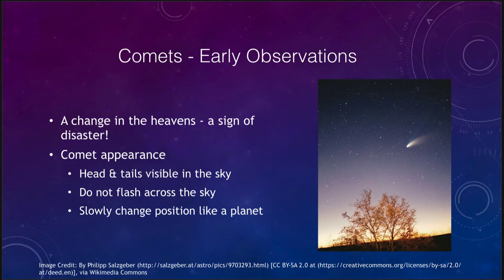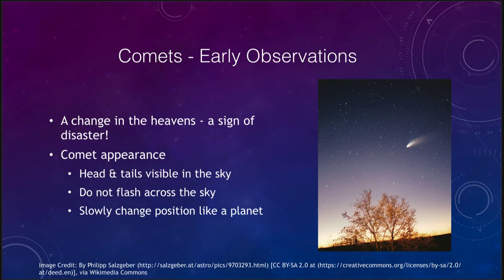We can see in this image that a comet has parts visible in the sky, which we call the head and the tails. We can see the head of the comet right at the center, and we have one tail curving off to one side and one going straight back — so actually two tails. Now, a comet does not flash across the sky, so it does not behave like a meteor or a shooting star. They will slowly change position, just like a planet, orbiting through the solar system.